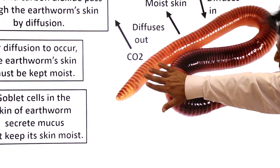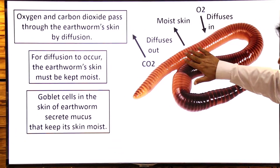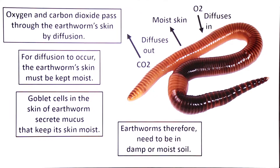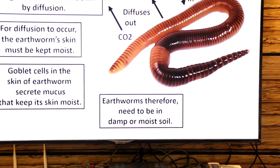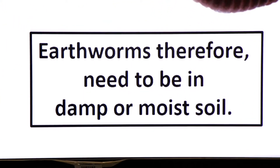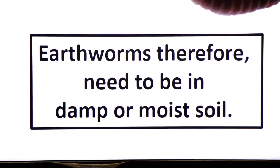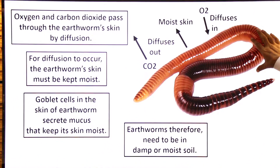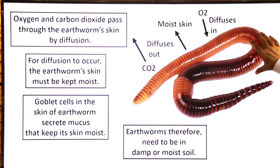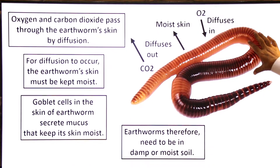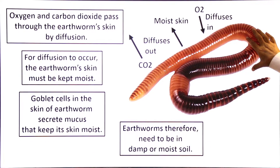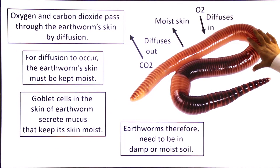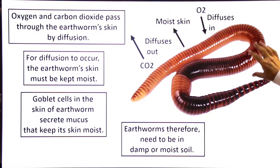Earthworm's skin mein goblet cells hote hai jo iski skin ko hamesha moist karte hai. Earthworm therefore needs to be in damp or moist soil. Earthworm hamesha moist soil mein rehna pasand karta hai kyunke iski skin hi sirf iska respiratory organ hai, jis ki wajah se isko apni skin ko hamesha moist rakhna parta hai.